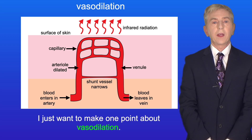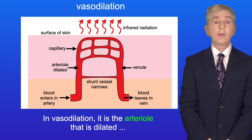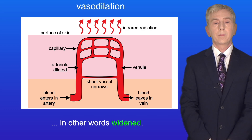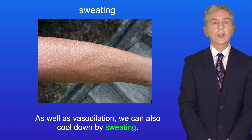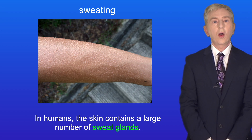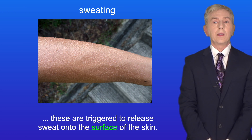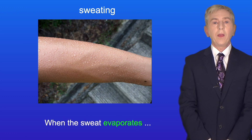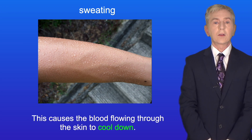One important point about vasodilation: it's the arteriole that is dilated, in other words widened. Some students say that the capillaries dilate, but that's not correct. As well as vasodilation, we can also cool down by sweating. In humans, the skin contains a large number of sweat glands. When the core body temperature rises, these are triggered to release sweat onto the surface of the skin. When the sweat evaporates, heat energy is transferred from the skin surface to the air, and this causes the blood flowing through the skin to cool down.